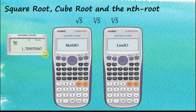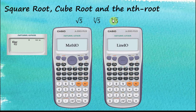For cube root: Shift, cube root, then 5 — it shows the answer directly. For the 6th root of 5, it's slightly more complex: press Shift and root, then start with the root index 6 first, then move to the number and enter 5, and press equal. That's how to do this using Math input/output.